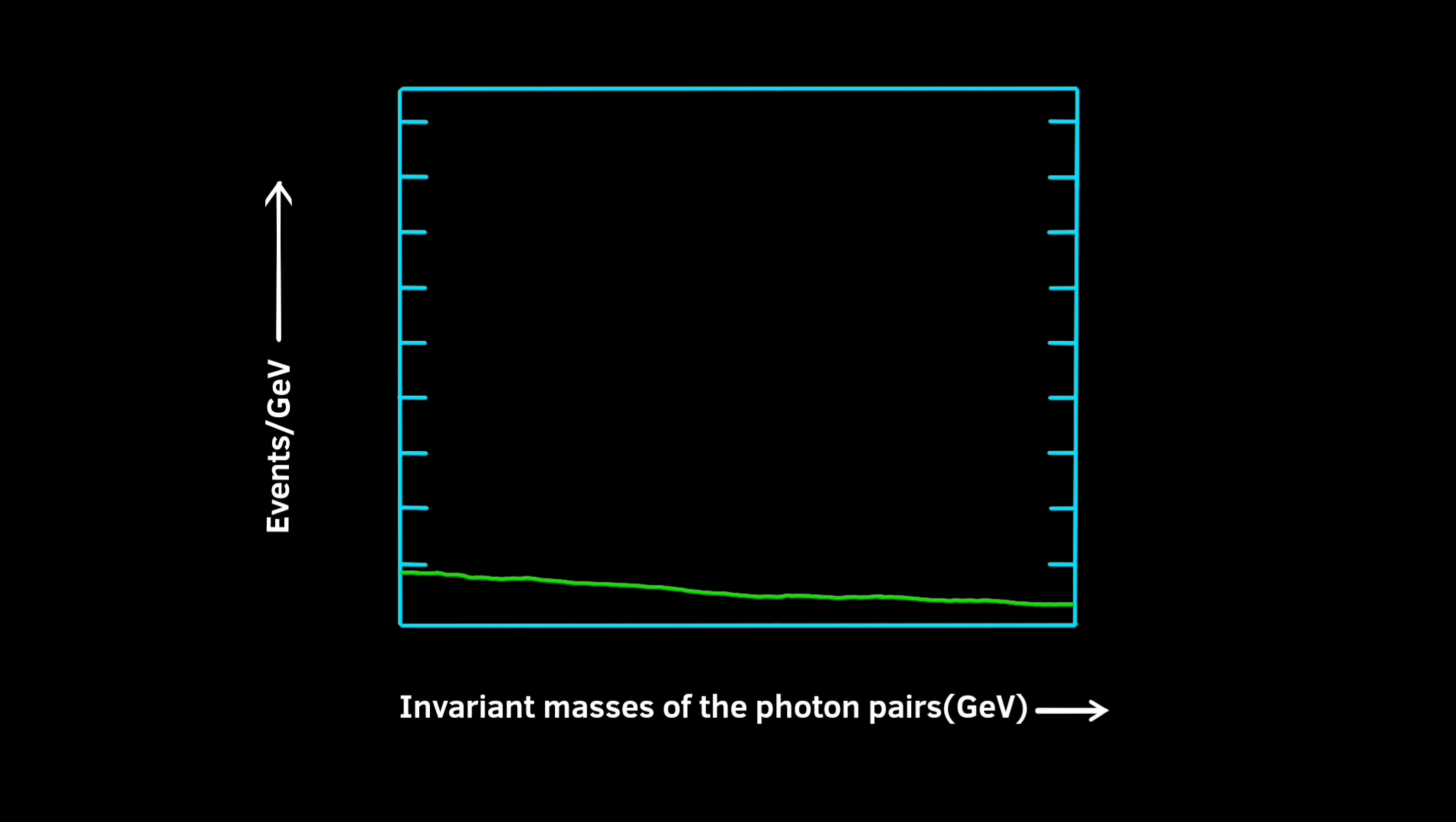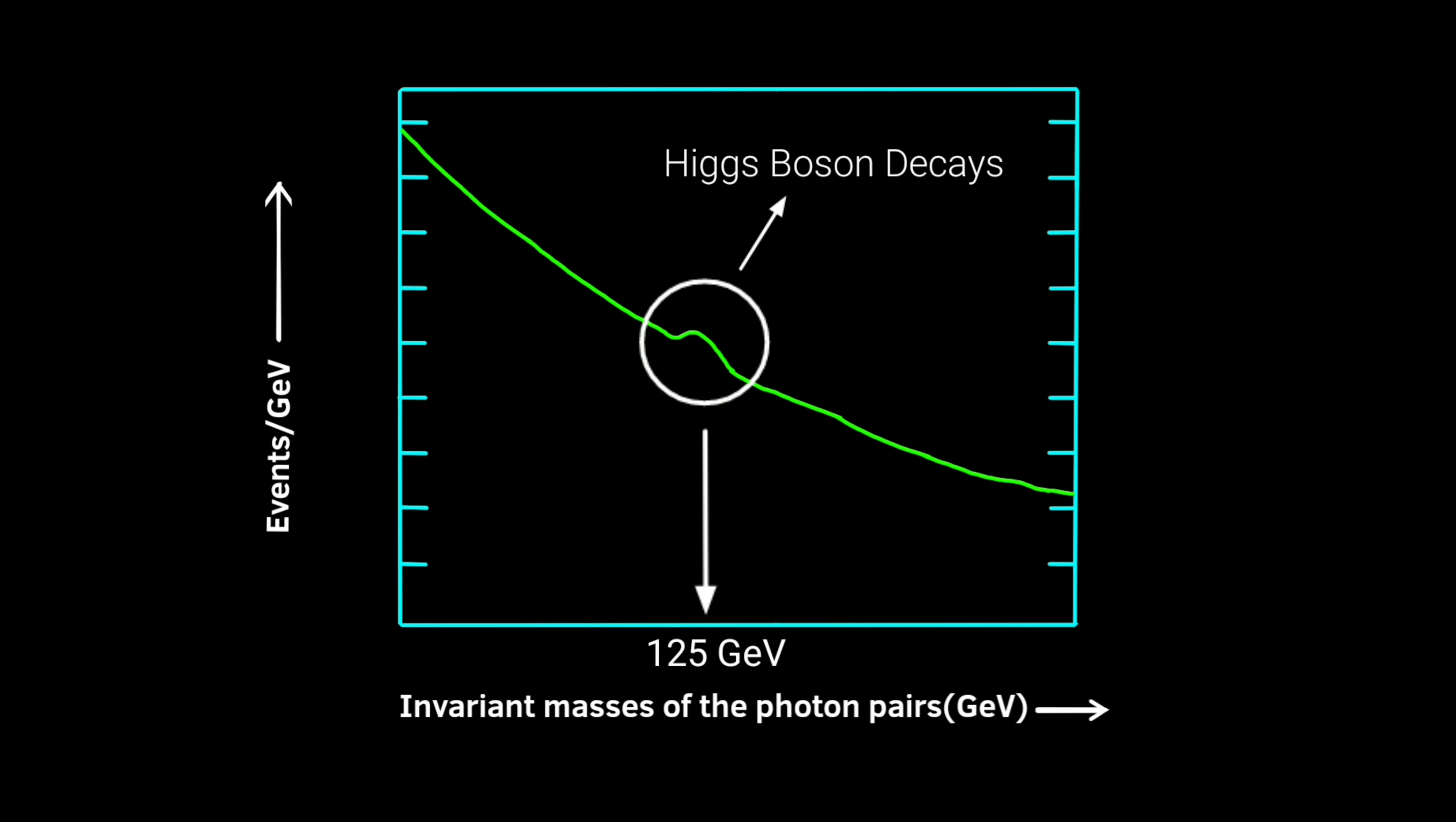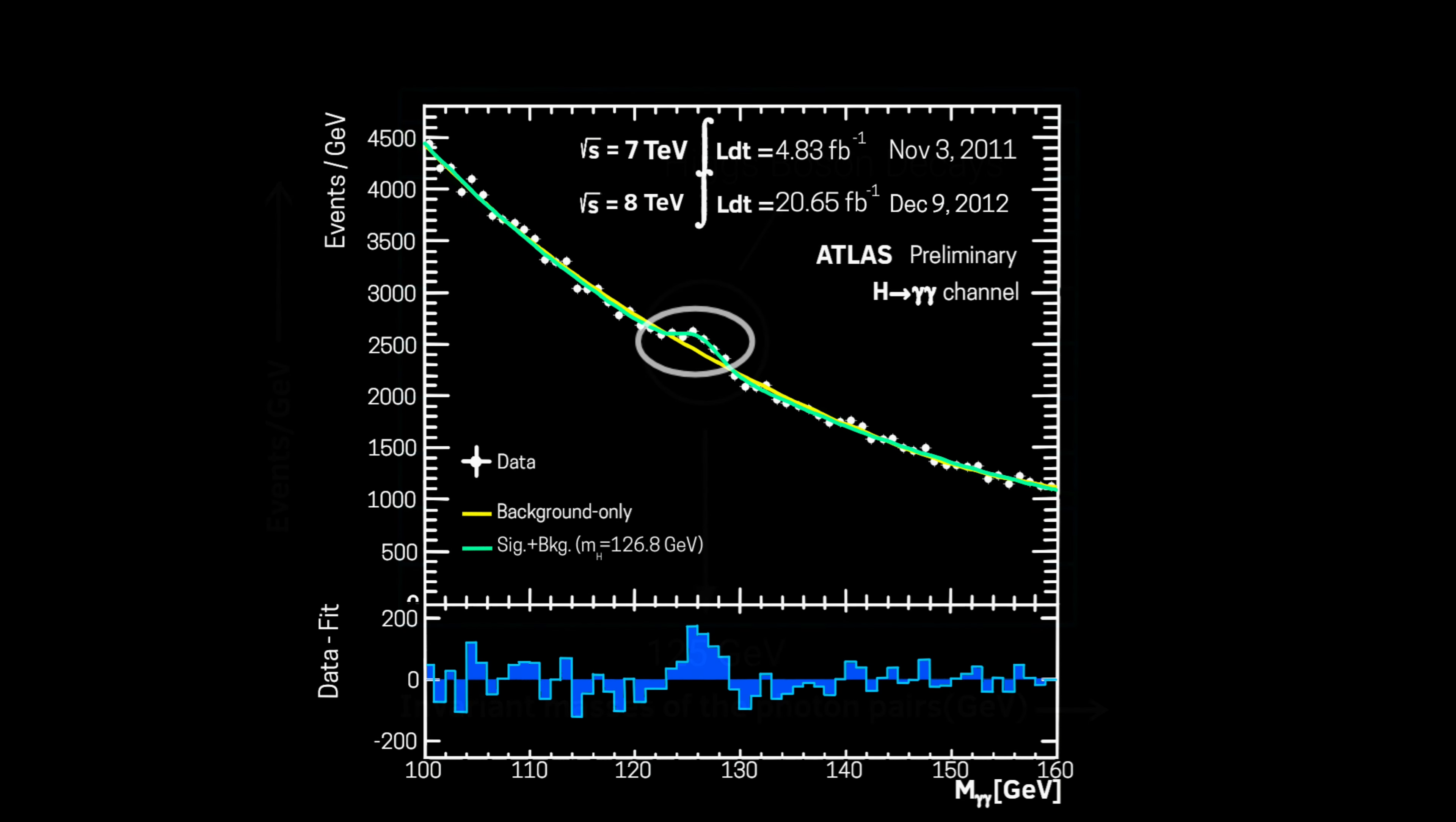As it's easier to produce photons with lower energy than with higher energy, when scientists made a plot of these invariant masses, they got a non-flat probability distribution and also a peak at around 125 GeV. That peak clearly shows that some unknown particles are decaying into photon pairs.